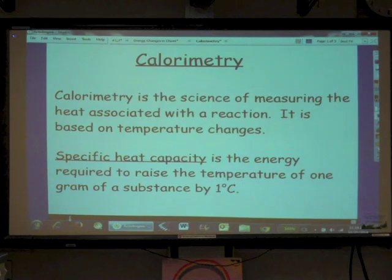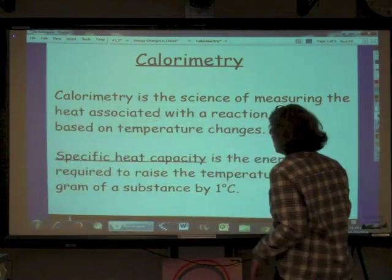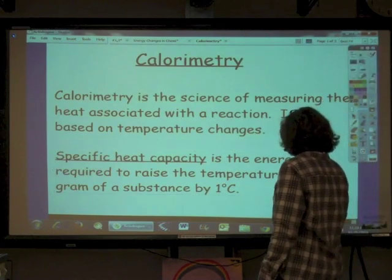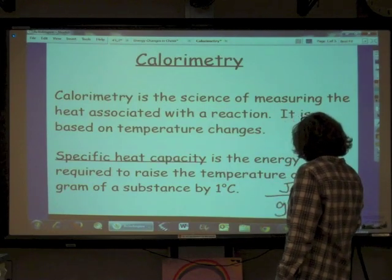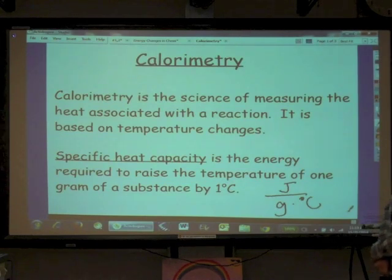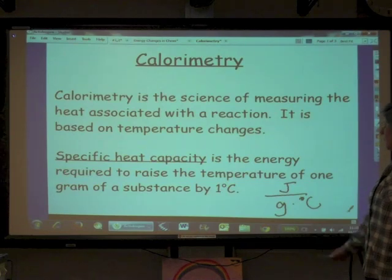To do calorimetry, we need to understand specific heat capacity. Specific heat capacity is the energy required to raise the temperature of one gram of a substance by one degree Celsius. Every substance has its own unique specific heat capacity, and depending on many factors, it takes different amounts of energy to raise the temperature. The units for specific heat capacity are joules per gram degree Celsius - the amount of energy needed to raise one gram of a substance by one degree Celsius.